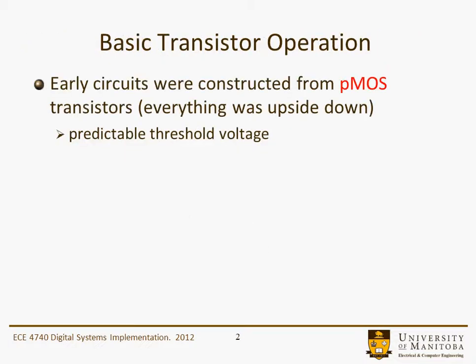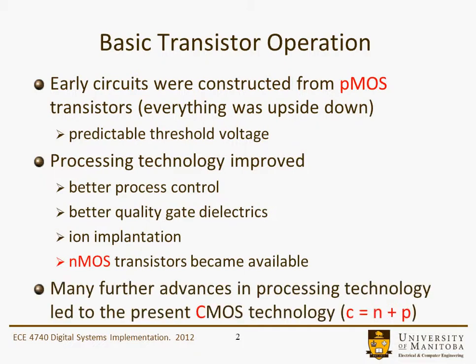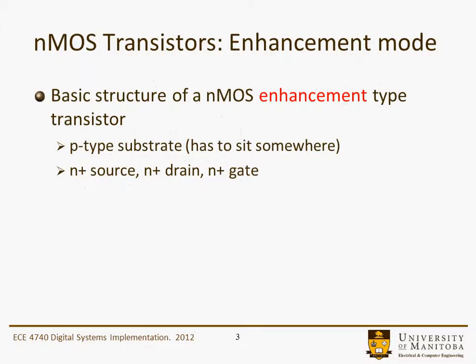We're going to look at basic transistor operation. Early transistor circuits were PMOS — basically all the polarities are upside down. It gave us predictable threshold voltage. As processing technology improved, the nMOS transistor became available, and further advances in processing led to the combination of both n- and p-type devices, and that became our CMOS technology.